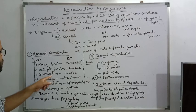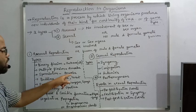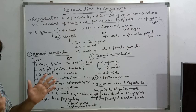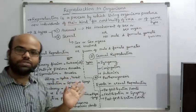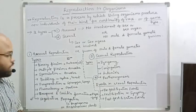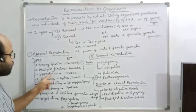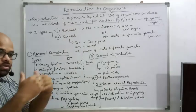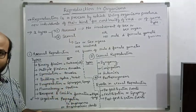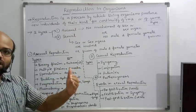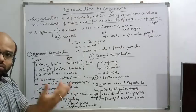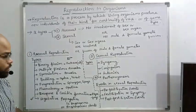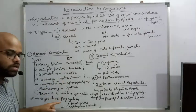Sporulation again means spore formation. I have already taught in first year that spore formation can be of either outer part or inner part. In the outer part, it is called an exospore — 'exo' meaning outer. In the inner part, it is called an endospore. Spore formation — Amoeba is again one of the examples.